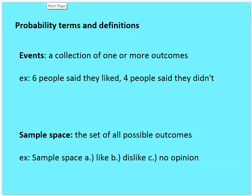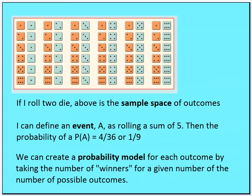Let's relate sample space, events, and probability model to rolling two dice. If I roll two dice, there are 36 possible outcomes, and the entirety of those outcomes is called the sample space. Here's a diagram of ways that two dice can be rolled where each die is unique, so a one and a six is different than a six and a one. Die one is orange and die two is a green-gray color, so a six and a one is a different outcome than a one and a six.